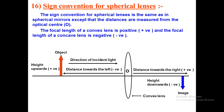For mirrors, the reference point is the pole, and for lenses it is the optical center. Distances measured to the left of the optical center are negative, and distances measured to the right are positive.